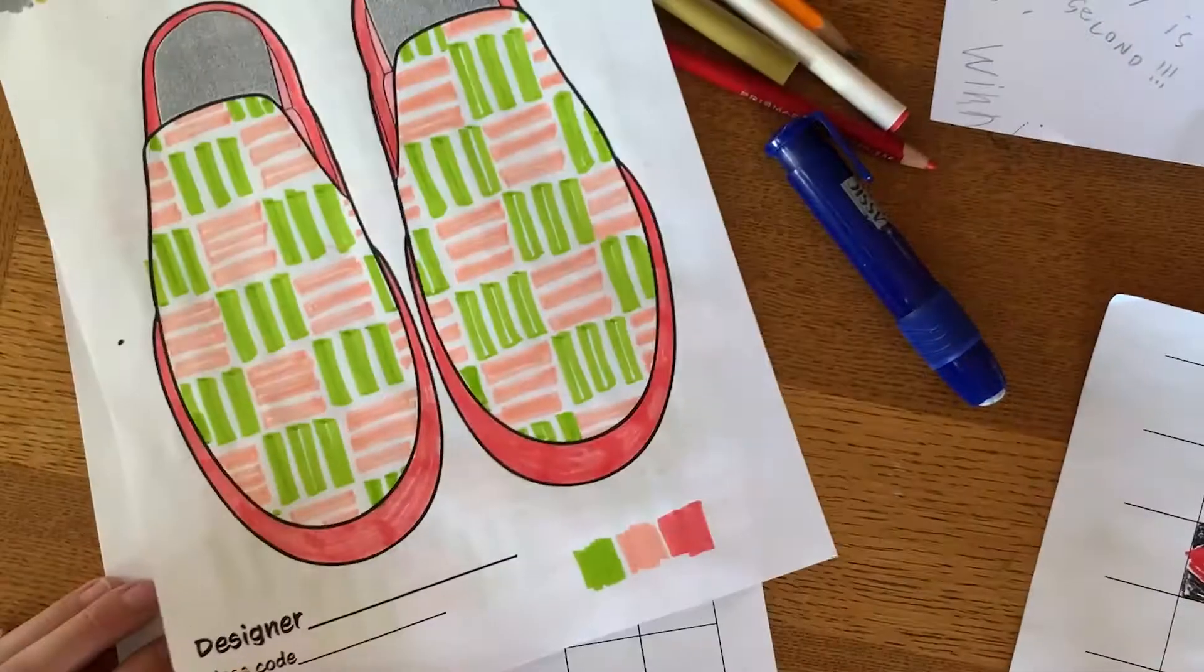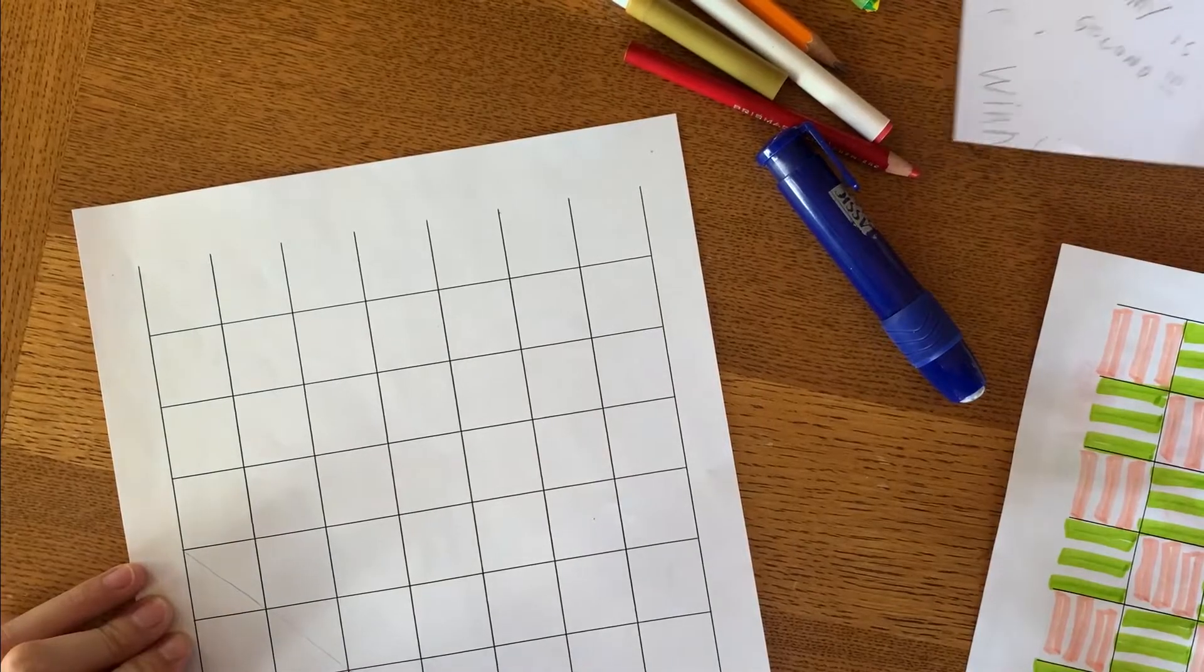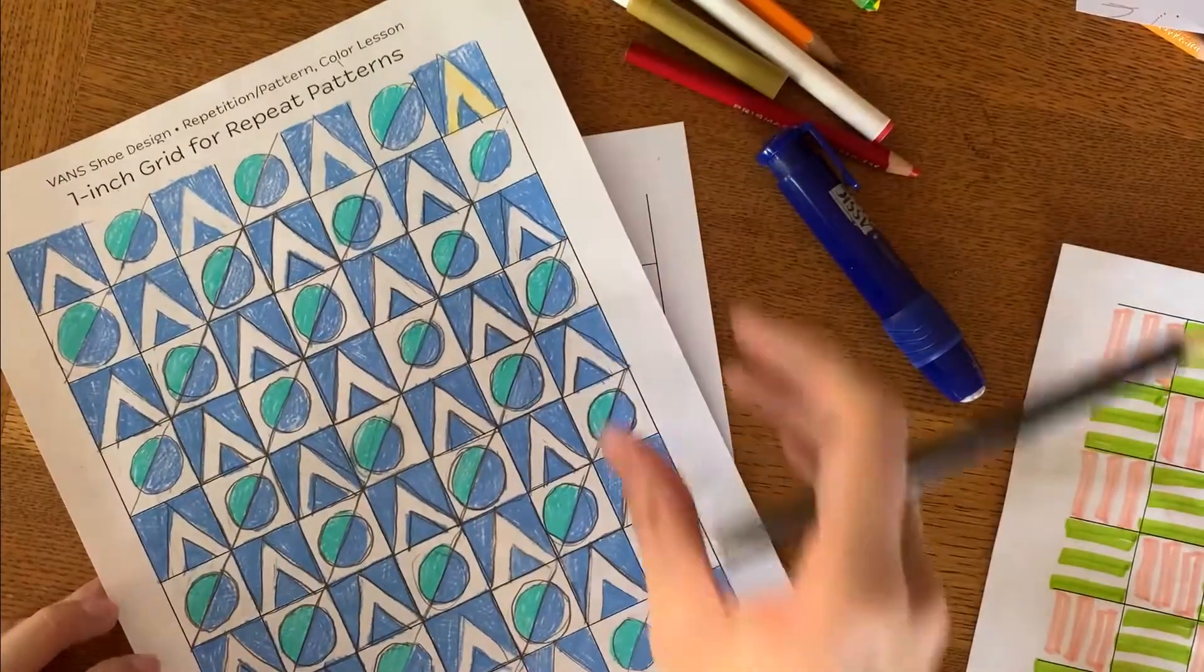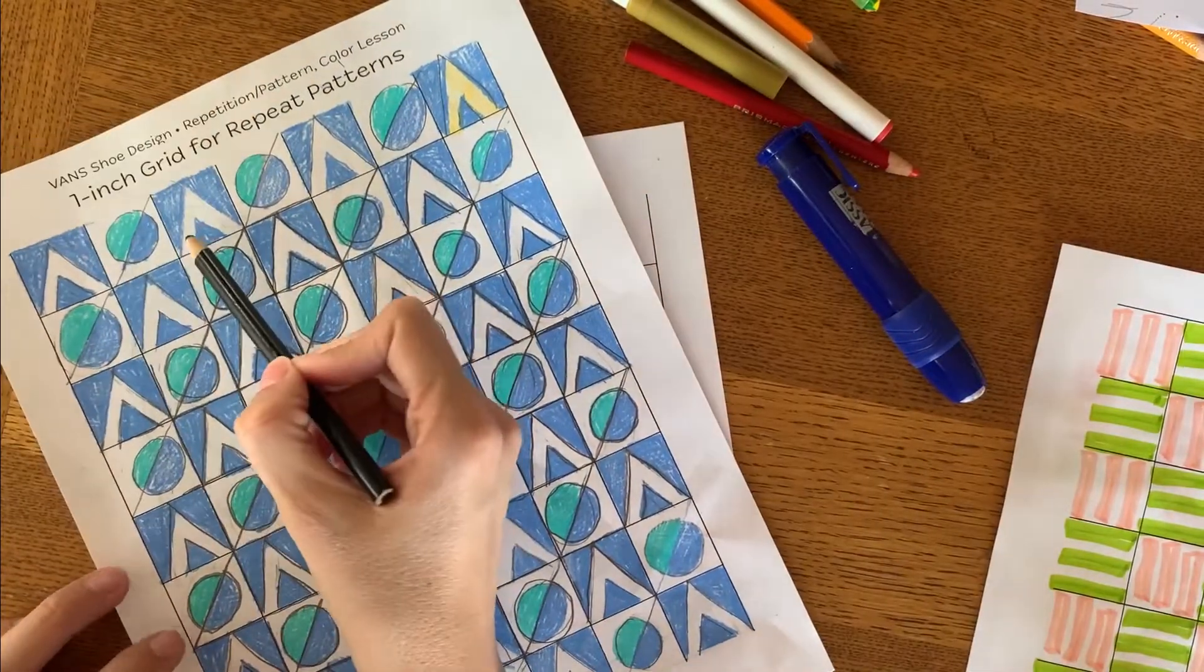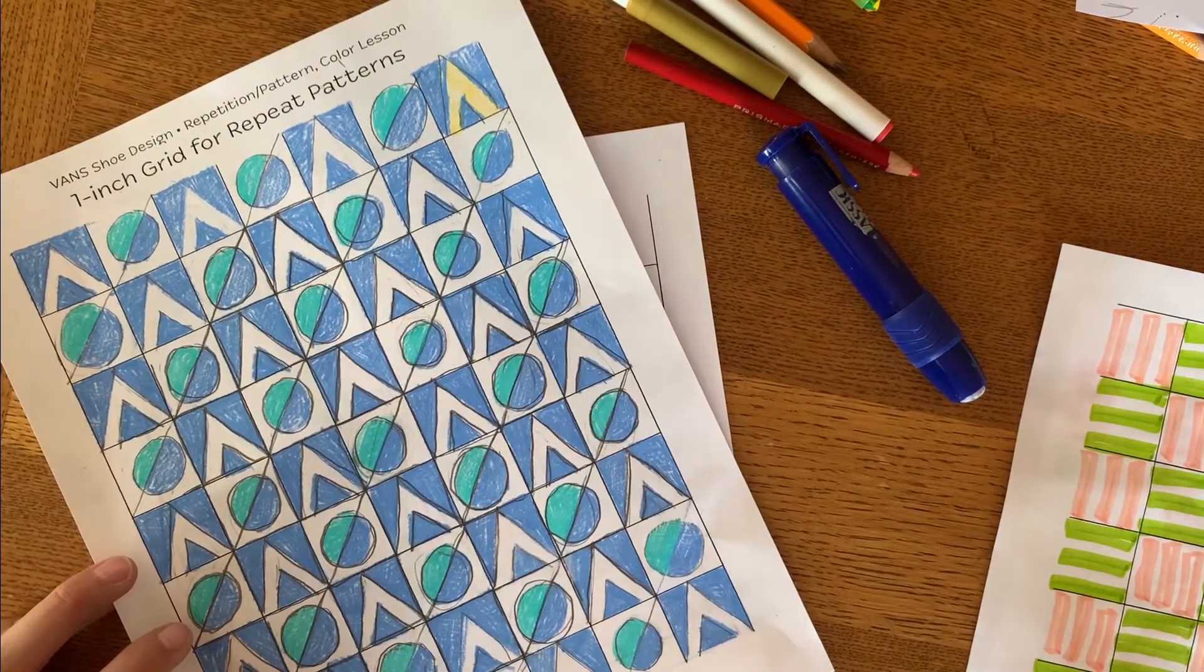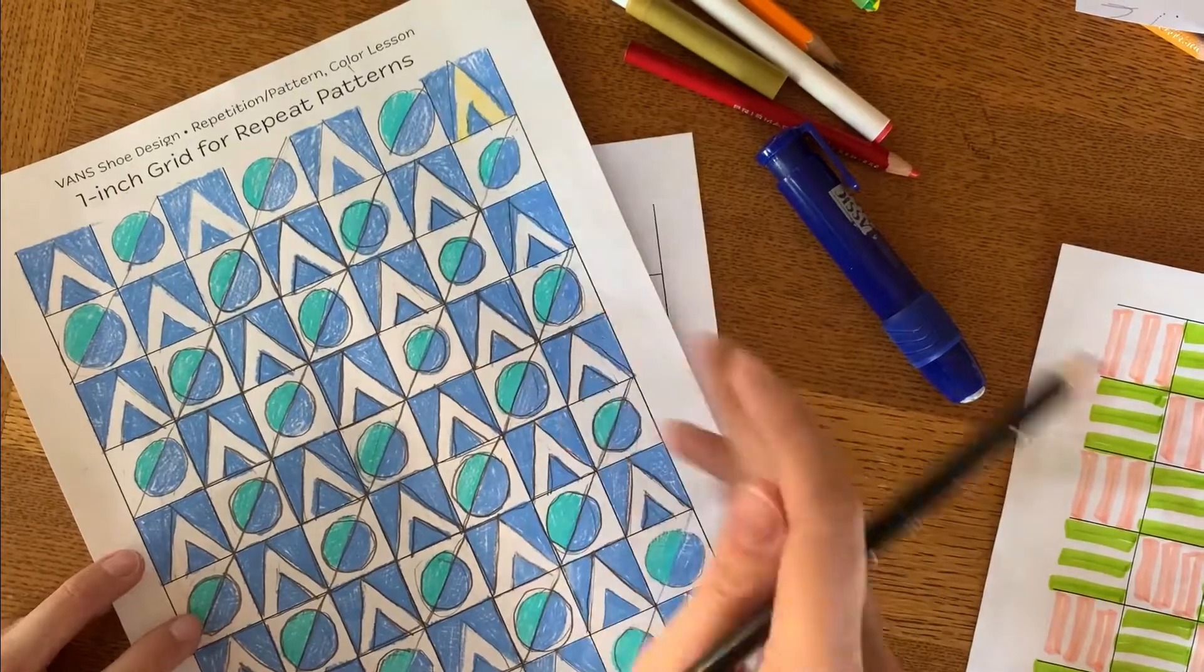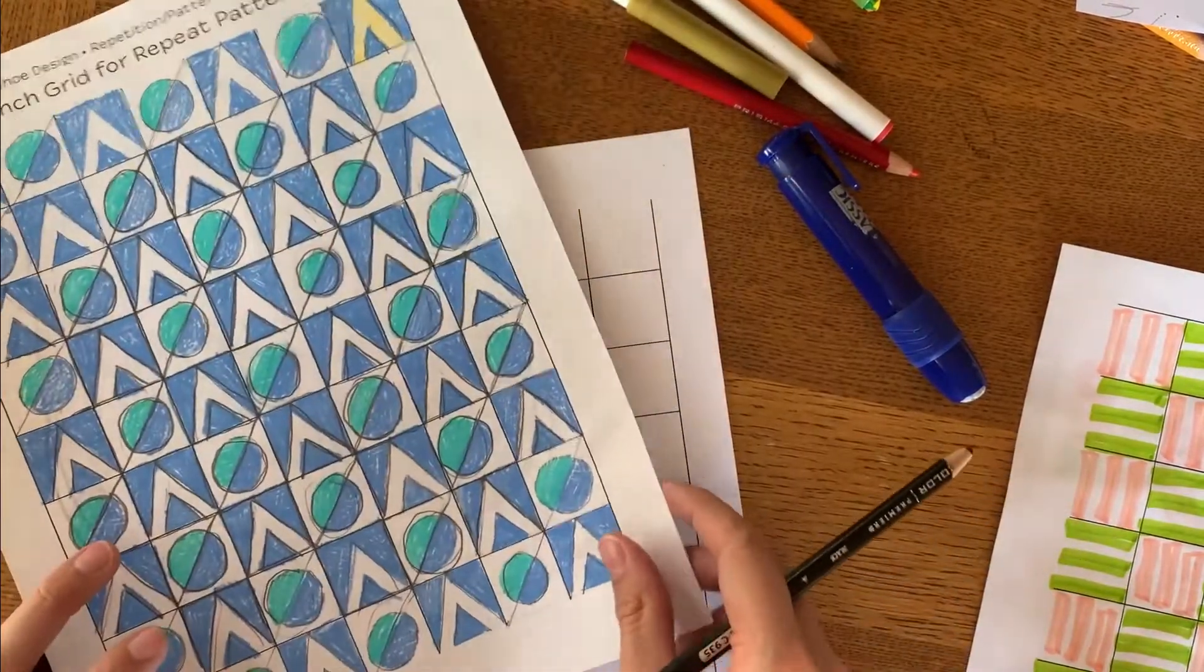And then that's how it looks when it's on the shoe. This is the one that you see during this video. Again, it's sort of that triangle with a triangle inside of it and then a circle with a line going through it. So this is my son's design, he's fourth grade.